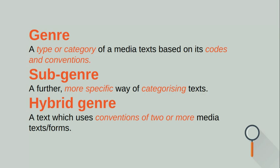Genre is a type or category of media text based on its codes and conventions — remember conventions are the defining features of that genre. For vampires those are castles, moon, bats, the night sky, the fangs, the blood. A subgenre is a more specific way of categorising texts, so under the umbrella of horror we may have torture porn like Jigsaw or The Human Centipede, supernatural horror like The Woman in Black or Sinister, or thrillers — there are several subgenres of that bigger genre.